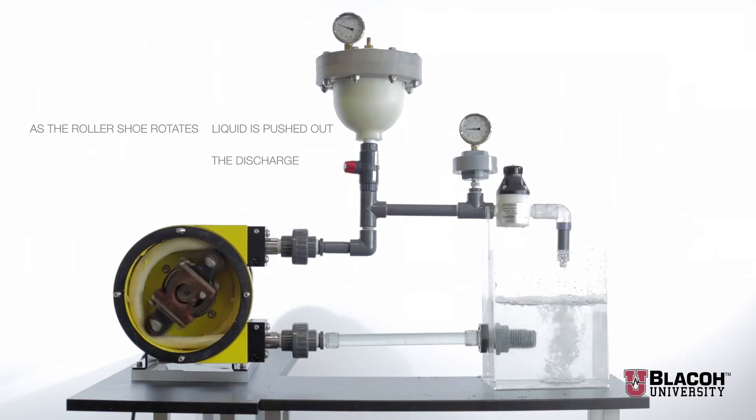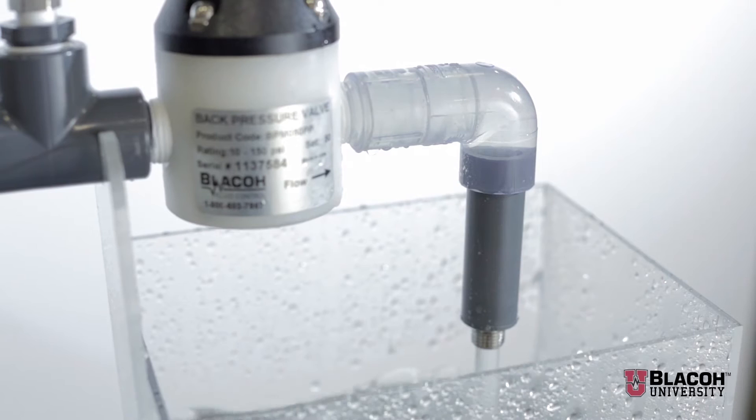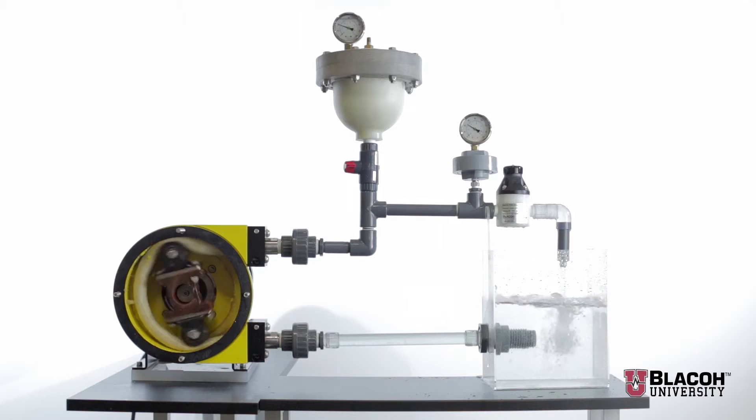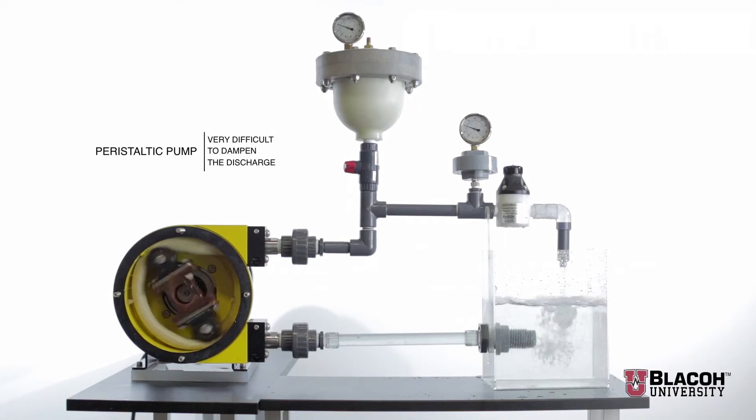When the roller shoe releases the hose after discharge, a momentary void or pocket is created where there is no product. This creates a partial vacuum as some product is actually sucked back to the discharge momentarily. This action, along with the normal pulsing action created by its positive displacement nature, makes the peristaltic pump very difficult to dampen the discharge flow.